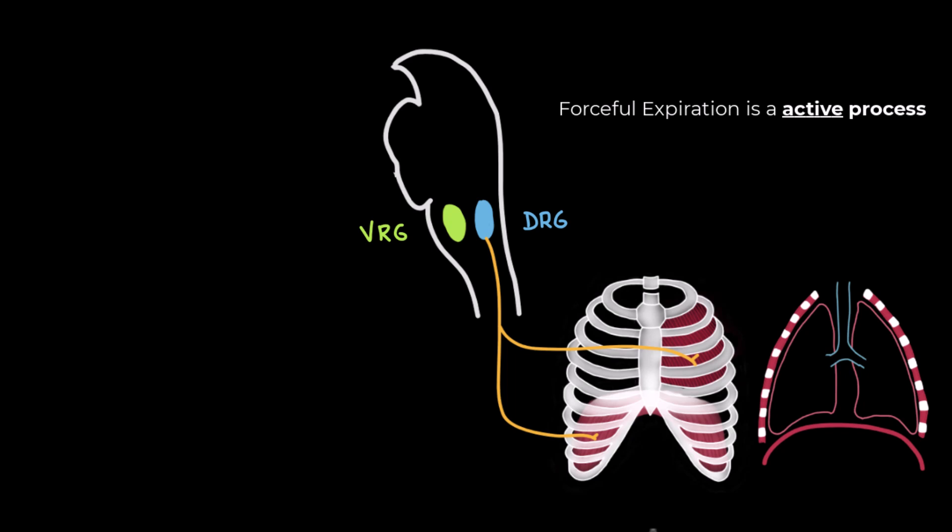In these situations, the ventral respiratory group in the medulla becomes active. The ventral group contains both inspiratory and expiratory neurons and plays a key role in coordinating forceful breathing.